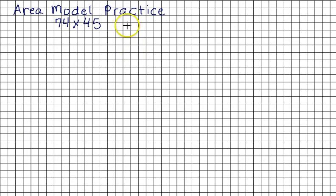This is quick reminder review practice on area models to multiply two-digit by two-digit numbers. The first step you need to do is put these two numbers in expanded notation. So these two numbers become 74 in expanded notation in parentheses is 70 plus 4 times, and 45 in expanded notation